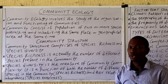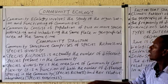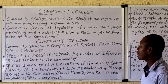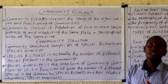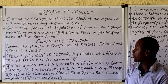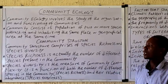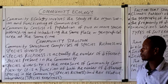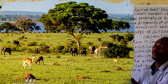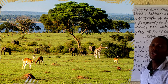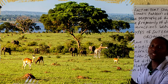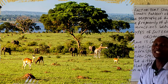When we talk about community structure, we are talking about the species richness and the species diversity of the community. Looking at the diagram on the board, you realize that the community displayed has different numbers of species present. If you count the number of species present in the environment, you are talking about the species richness of that particular community.